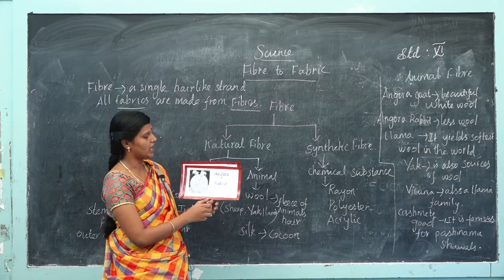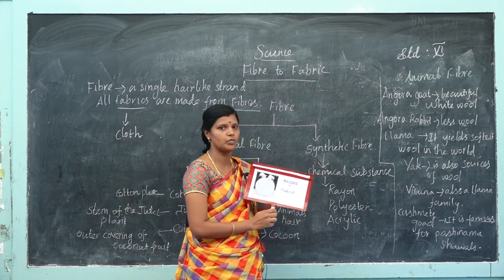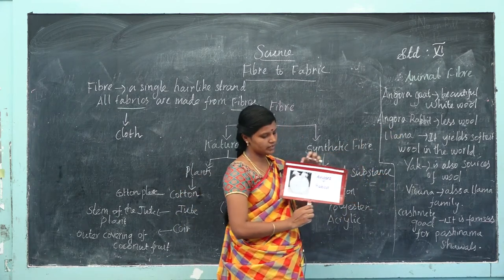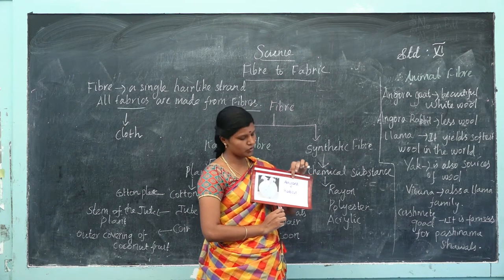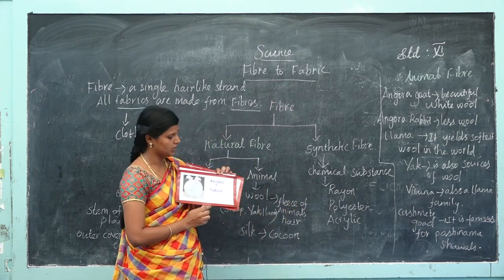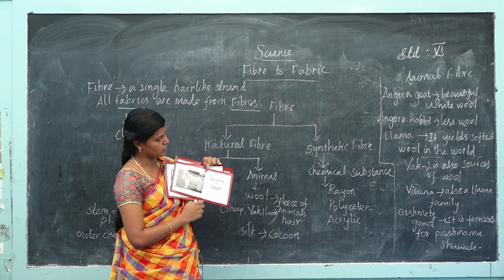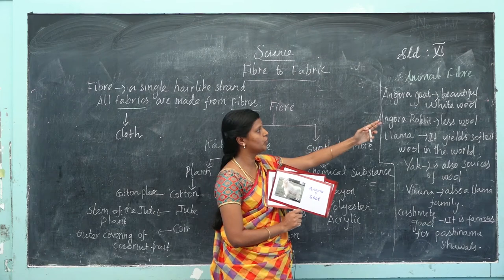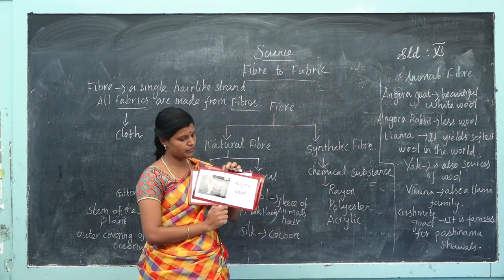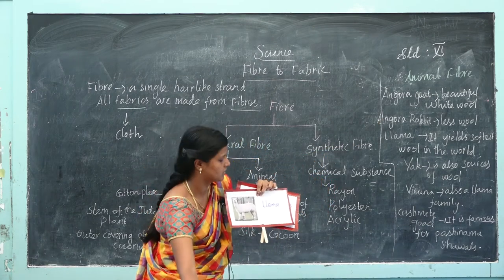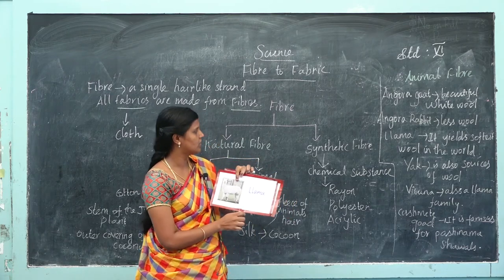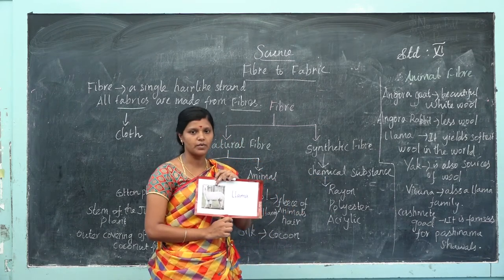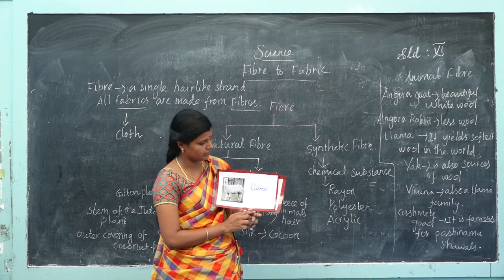The first is angora rabbit. Angora rabbit produces less wool, but it is very expensive. Next is angora goat — this is the picture of angora goat; it yields beautiful white wool. Next, the llama yields the softest wool in the world.